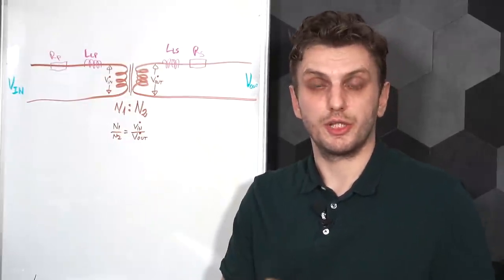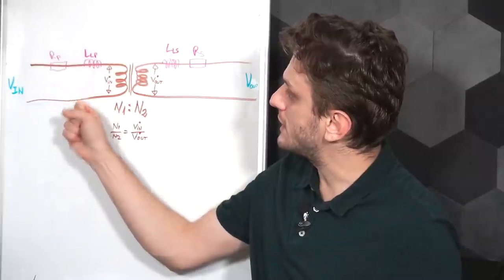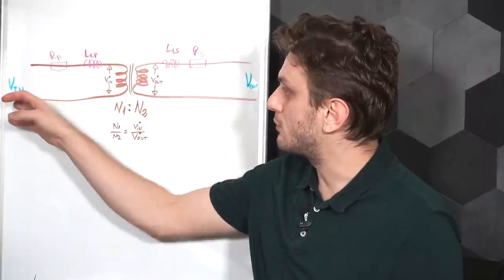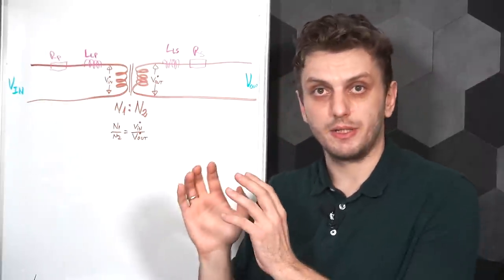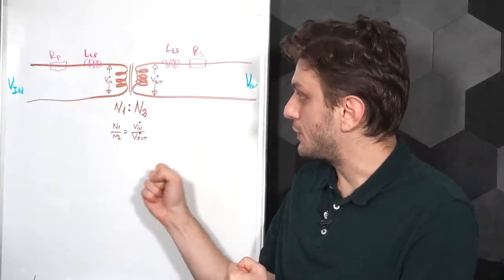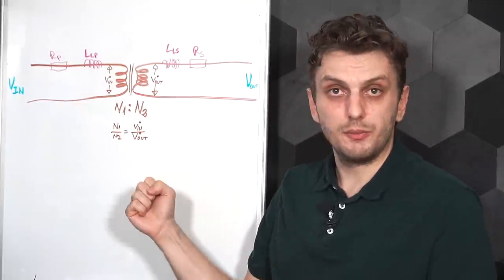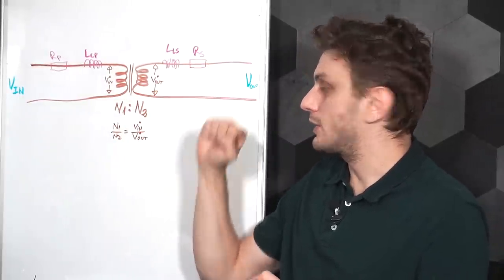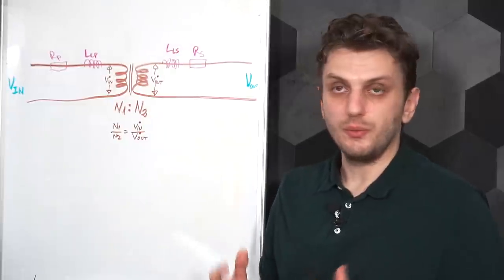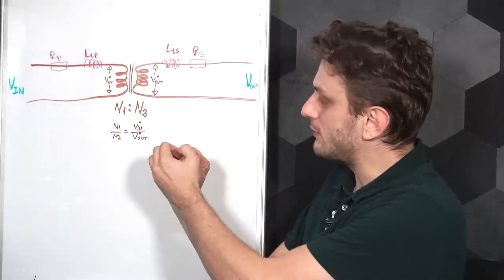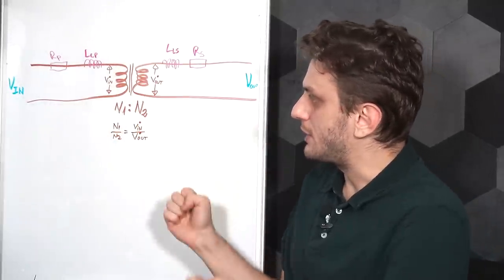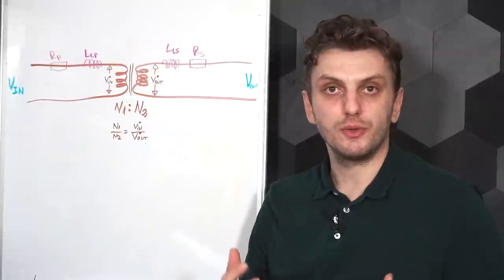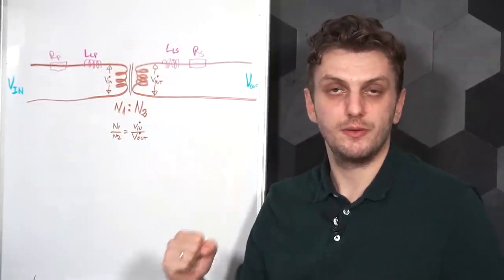So when applying a voltage to a transformer, part of it drops on the series resistance, part on the series inductance, and only a portion of the input voltage actually reaches the ideal part of the transformer where the turns-to-voltage ratio holds. On the secondary the same phenomenon occurs: the output voltage partially drops on series inductance and series resistance. So even though the turns-to-voltage ratio is true in the ideal section, because of various losses it won't be true over the overall structure. The output voltage will always be smaller than input voltage times the turns ratio.